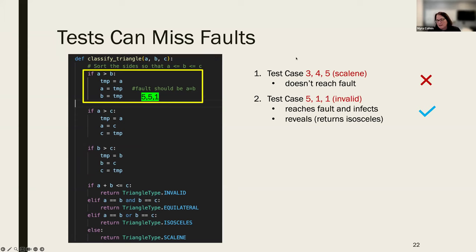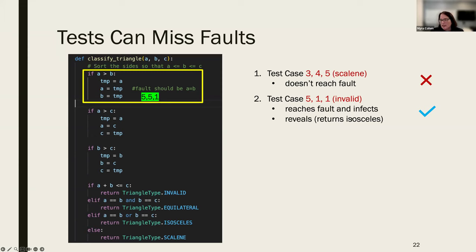Running a second test case (5, 1, 1) — an invalid triangle geometrically — five is greater than one, so it reaches the fault. It also infects the program because it changes the state to (5, 5, 1) instead of correctly sorting to (1, 5, 1). Now (5, 5, 1) is actually a valid isosceles triangle, so the result will be 'isosceles.' This is a good test case — it will find the fault.